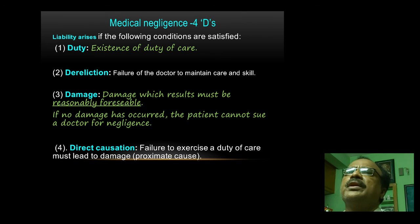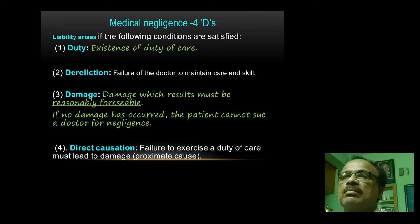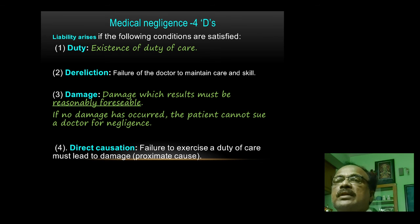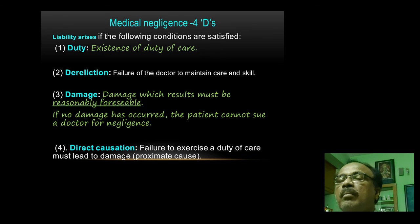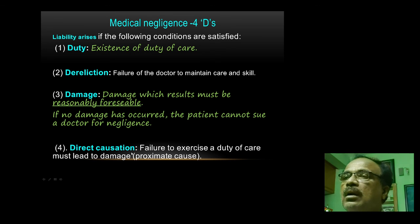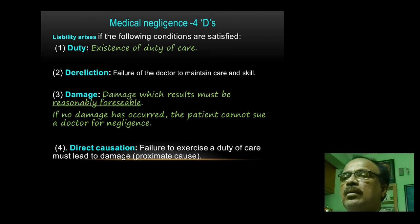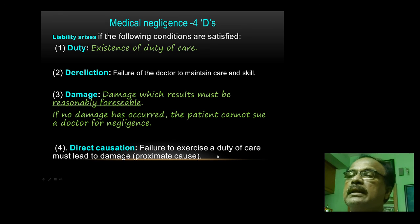Medical negligence in a nutshell — the four Ds: Duty, the existence of a doctor-patient relationship is a must to establish a doctor's negligence. Dereliction, that is negligence. Damage — damages must result from the negligent action of the doctor; if there is no damage, there is no question of negligence. Direct causation — whatever the doctor's negligent action, such as wrong medicine or wrong route, the resulting damage (e.g., anaphylactic reaction) should be directly related to that negligent action.